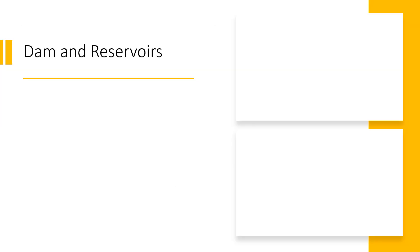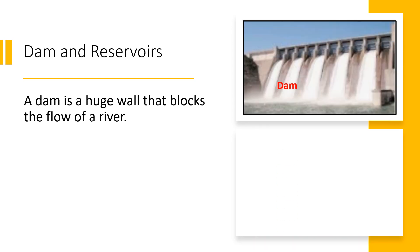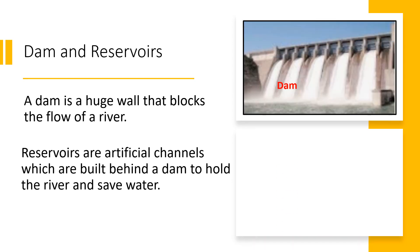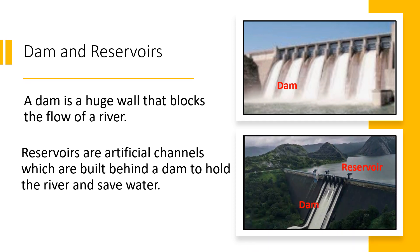Now we will learn about dams and reservoirs. A dam is a huge wall that blocks the flow of a river. This causes the river to form large lakes which are called reservoirs. Reservoirs are artificial channels built behind a dam to hold river water and save it.